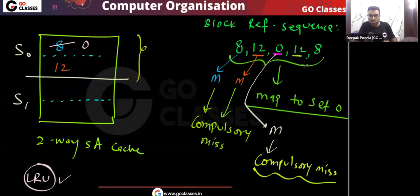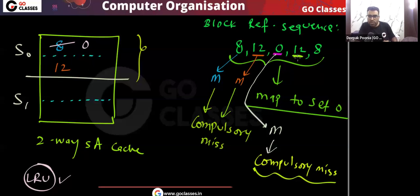Next, block 12 — 12 is already present in the cache memory, so this is a hit.